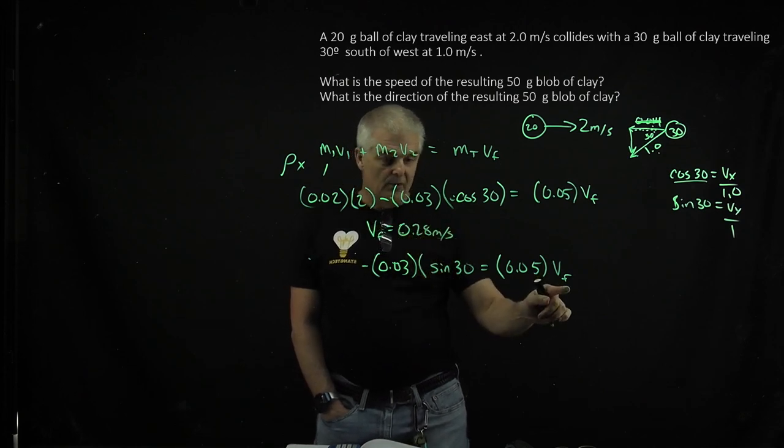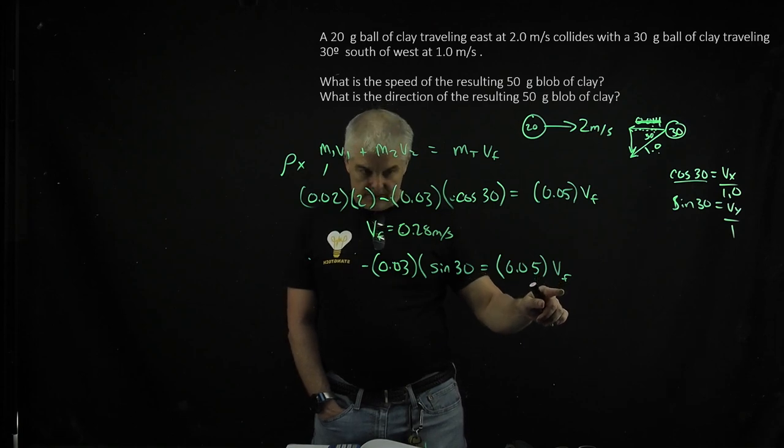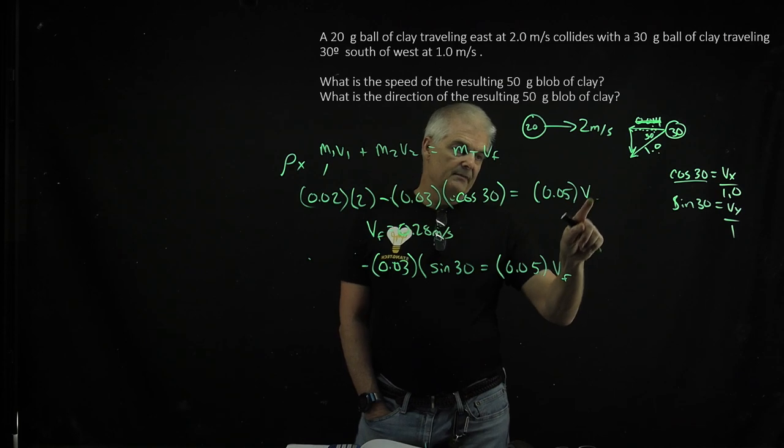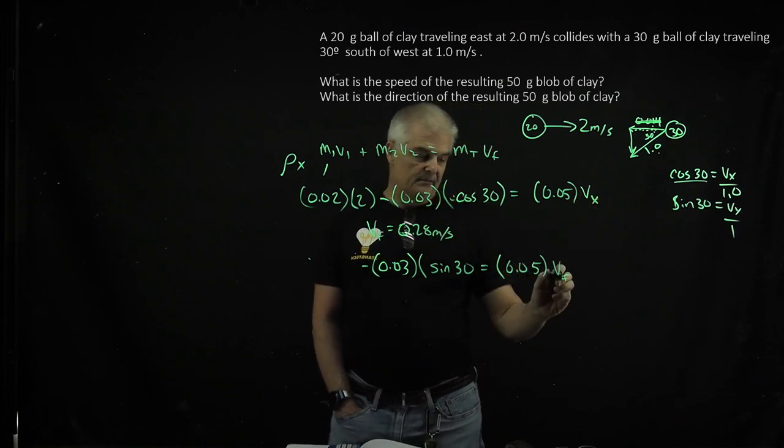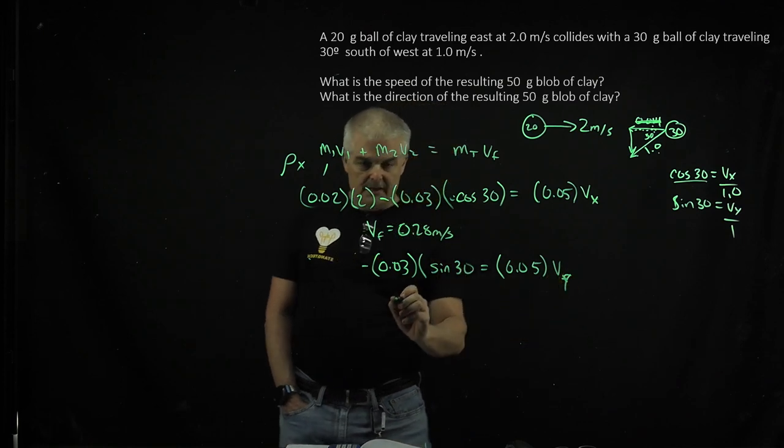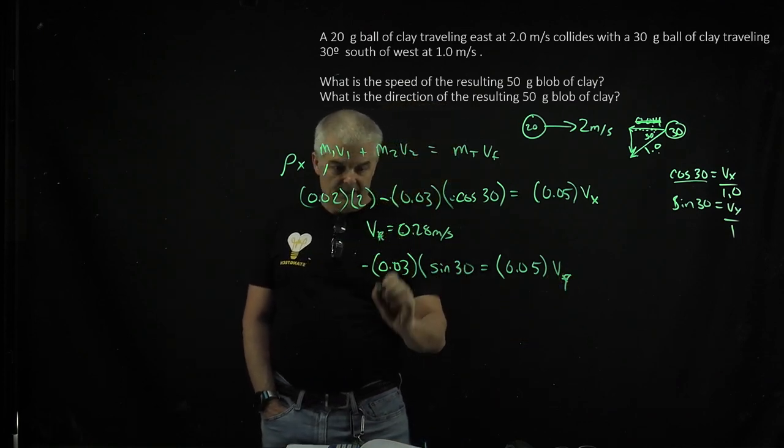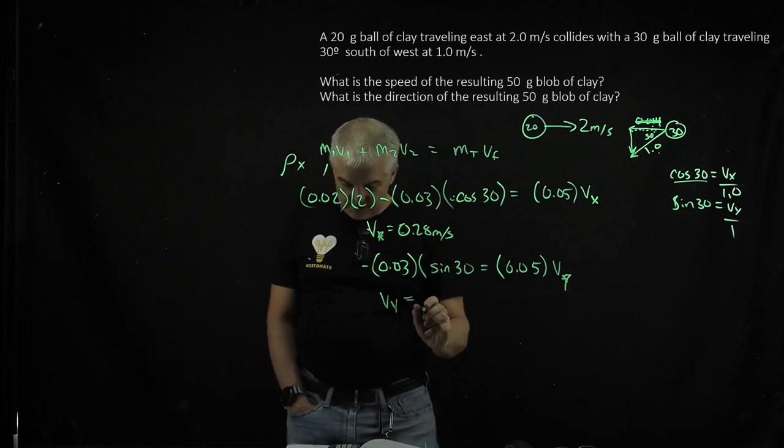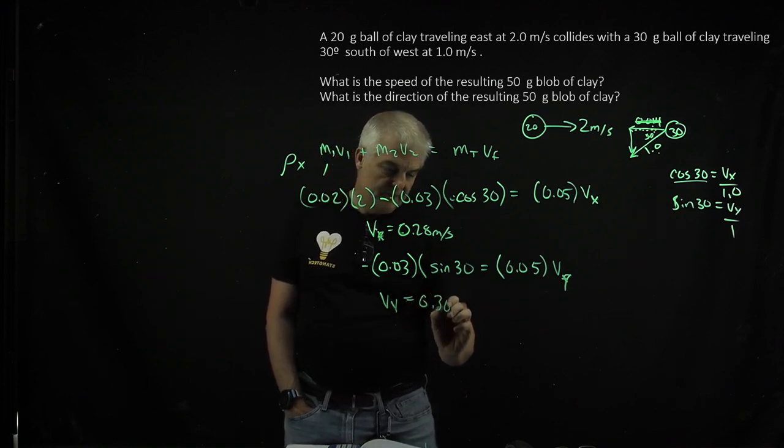This is actually Vₓ, and this is going to be Vᵧ. When you do the math and solve for this, you get 0.30 meters per second for Vᵧ.